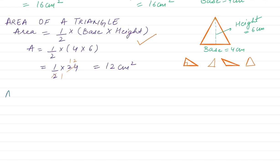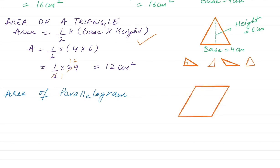Let's do the area of another 2D figure: the area of a parallelogram. Let's draw the parallelogram first. We know that a parallelogram has parallel sides — two sides are equal and the other two sides are equal, like a rectangle. But in a parallelogram, the sides are parallel rather than perpendicular. This is the base, and let's draw the height of the parallelogram — this is the height. The area of a parallelogram is equal to base times the perpendicular height.